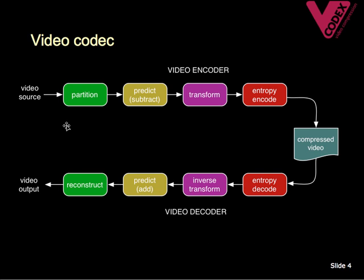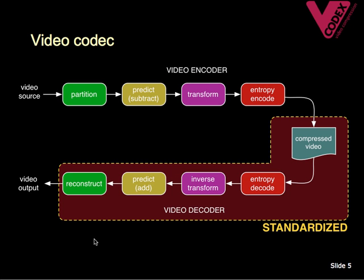It's important that a video encoder and a video decoder can talk to each other and interoperate. For example, if I take a video using my phone and send it to you using BeamShare, I want to know that you'll be able to play it back on your phone or your iPad or your computer. One way to make this work is to use a standard for video coding. The shaded area here is what will be covered by a standard.